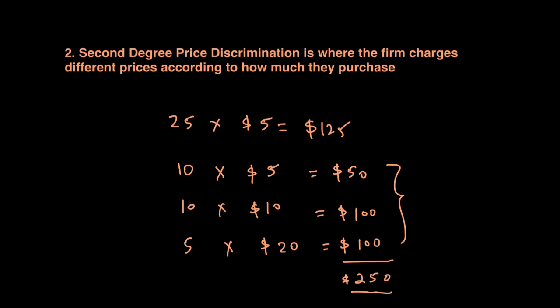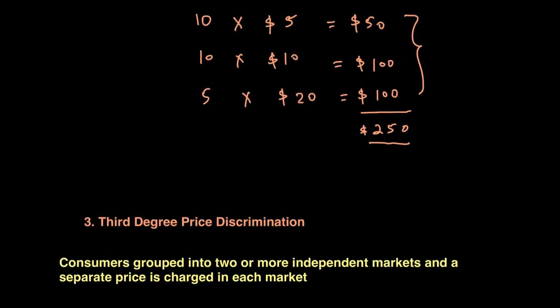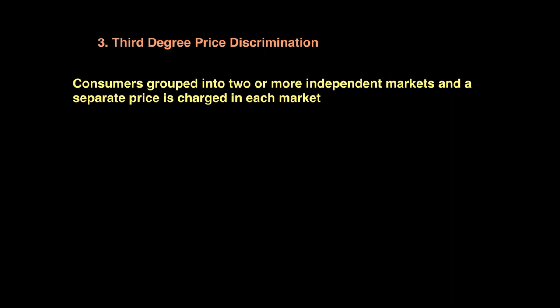Third degree price discrimination is where consumers are charged different prices as they are grouped into two or more independent markets. Examples include students or older people getting discounted bus fares, the young or old getting cheaper access to sporting events, or different prices for travelling during rush hour versus non-rush hour. Consumers are put into different groups and discriminated according to the elasticity of their demand — those with inelastic demand have a higher willingness to pay and therefore pay a higher price.